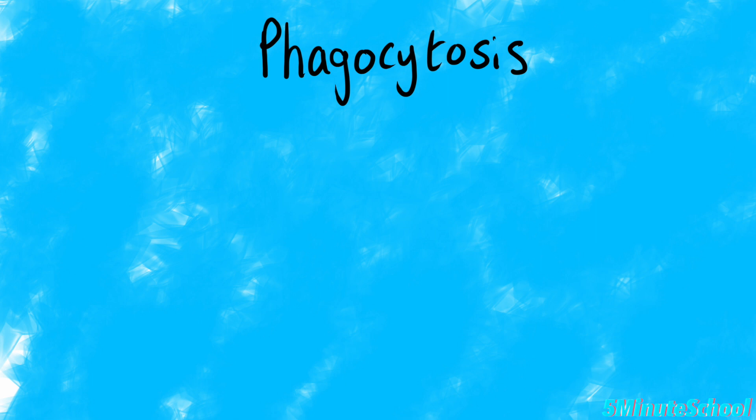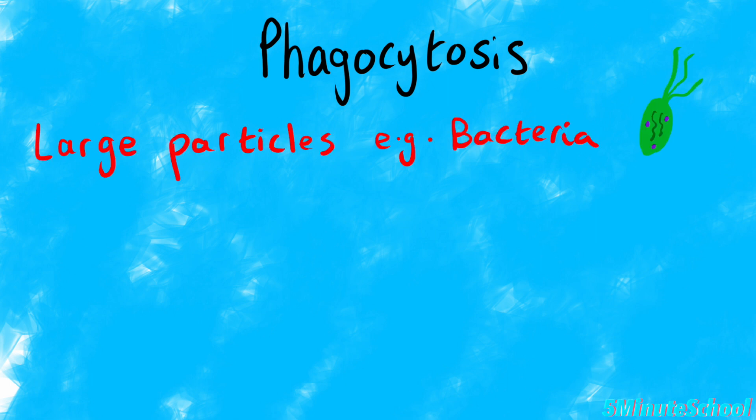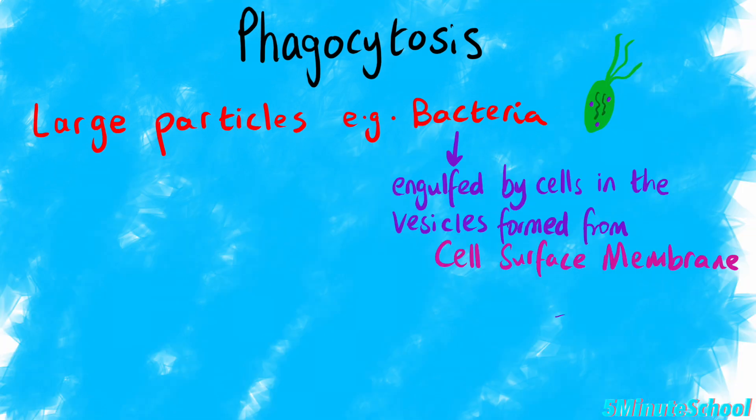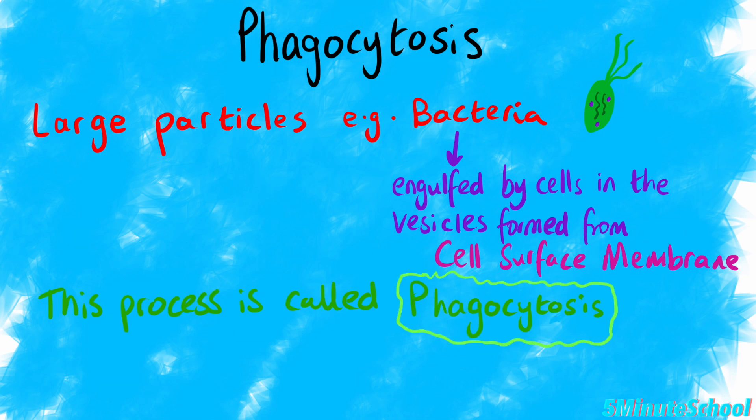Large particles, such as some types of bacteria, can be engulfed by cells in vesicles formed from the cell surface membrane. This process is known as phagocytosis.